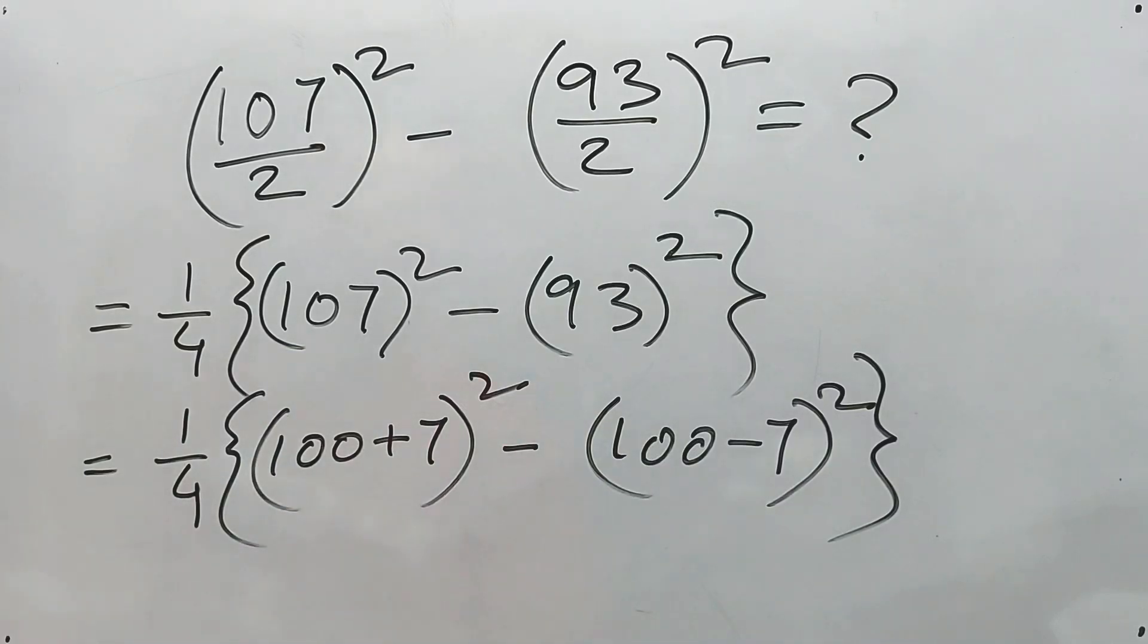So now 4ab, again there will be 1/4, so it will be ab. The formula is only ab because there is 1/4. So this is equal to 100 into 7, that means 700. That's it, simple my friend.